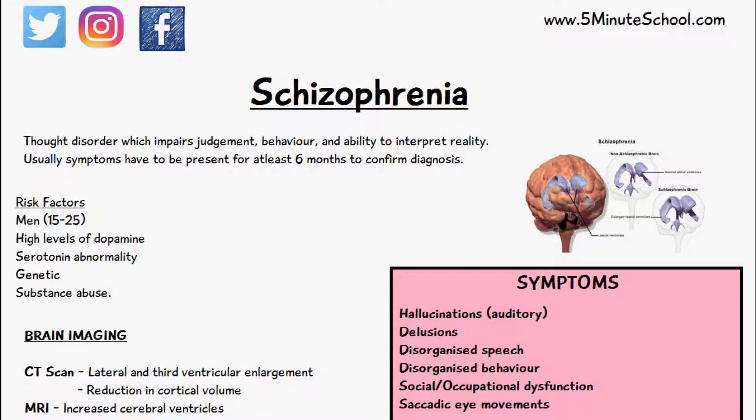Other factors include substance abuse. Schizophrenia has been seen as a result of certain recreational drugs that people have been taking. These include drugs like cocaine, methamphetamine, cannabis, and also other substances like alcohol.